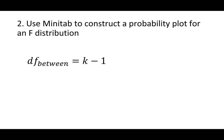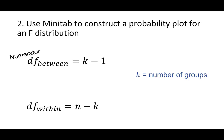Degrees of freedom between groups is equal to k minus 1, where k is the number of groups. Minitab Express will call this the numerator degrees of freedom. Degrees of freedom within groups is equal to n minus k, where n is the total sample size and k is the number of groups. Minitab Express will call this the denominator degrees of freedom. When we conduct an ANOVA, the p-value will be the area to the right of the test statistic on the F distribution. ANOVAs are always right-tailed tests.